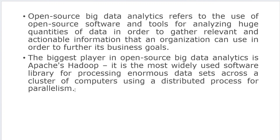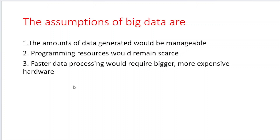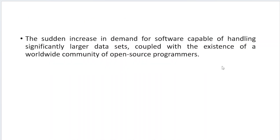Apache Hadoop is the most widely used software for processing enormous datasets across a cluster of computers using distributed processing for parallelism. The assumptions of big data were that generated data would be manageable, but over time programming resources became scarce — we don't have sufficient skilled persons. Running Hadoop requires complete skill and Java professionals. Faster data processing would require bigger and more expensive hardware — those are the general assumptions of big data, but the scenario has completely changed.